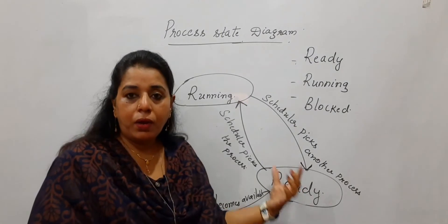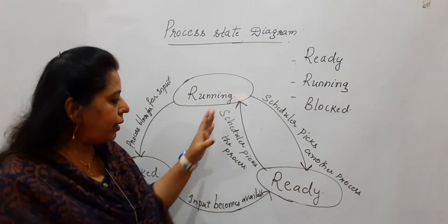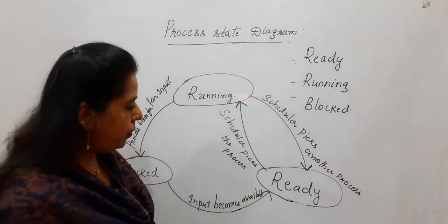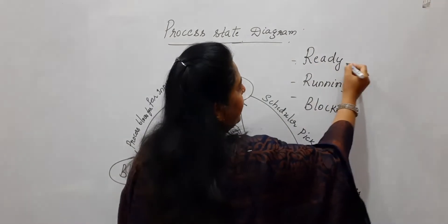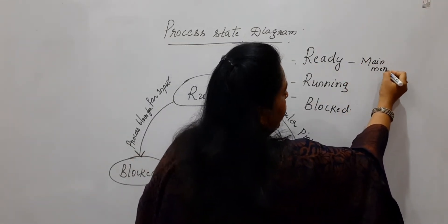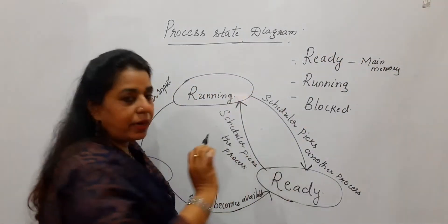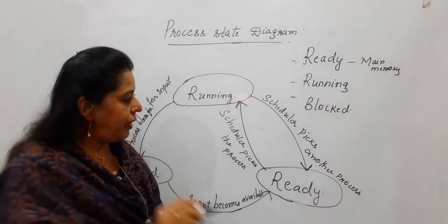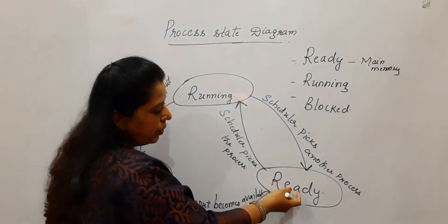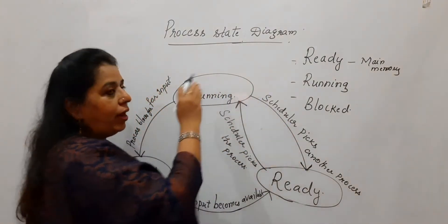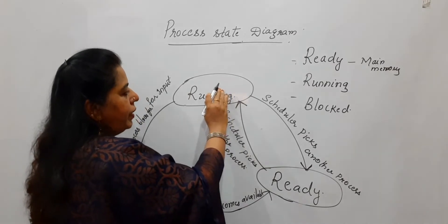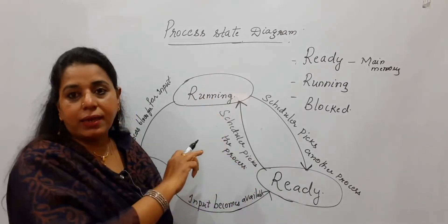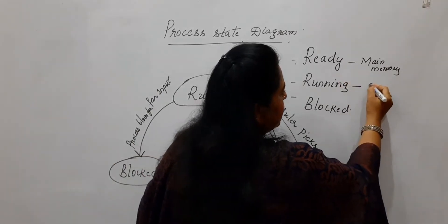The first one is the ready state. To help you remember, it is not simply about knowing running, ready, and blocked — you should also know which type of resource is attached with which state. For the ready state, always think of it as main memory. All processes are there in the main memory, so the processes are ready for execution. The scheduler is a program which picks the process from the ready state — that is, from main memory — and allocates it to the CPU for execution.